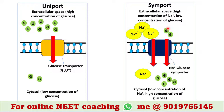Let's talk about symport now. In this transport technique, two types of substrates cross the plasma membrane in the same direction. An example is the sodium-glucose symporter found in the nephron of our kidney. Here, sodium ions move down the concentration gradient — from higher concentration in the extracellular space to lower concentration in the cytosol — and glucose molecules move against the concentration gradient, from lower concentration in the extracellular space to higher concentration in the cytosol.